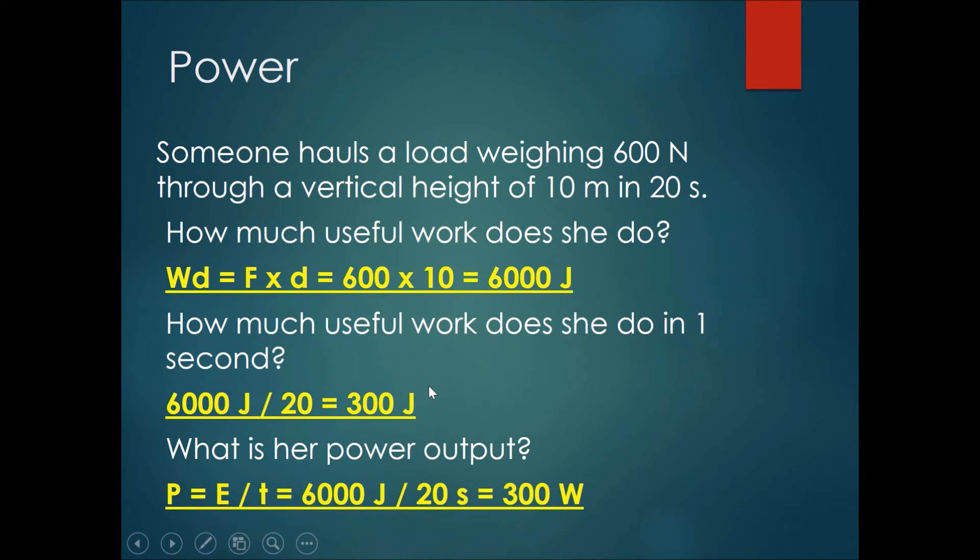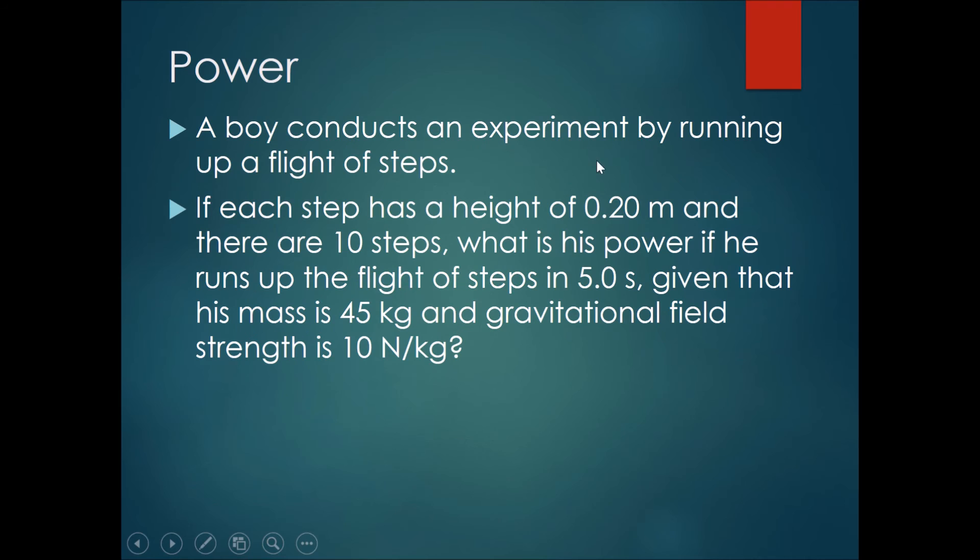A boy conducts an experiment by running up a flight of steps. Each step has a height of 0.2 meters and there are 10 steps. What is his power if he runs up the flight of steps in 5 seconds? His mass is 45 kg and the gravitational field strength is 10 newtons per kg. Please pause the video here and solve the question.